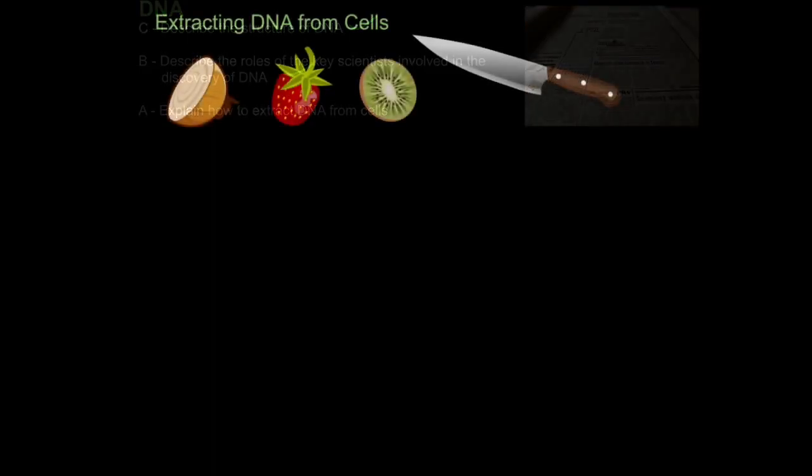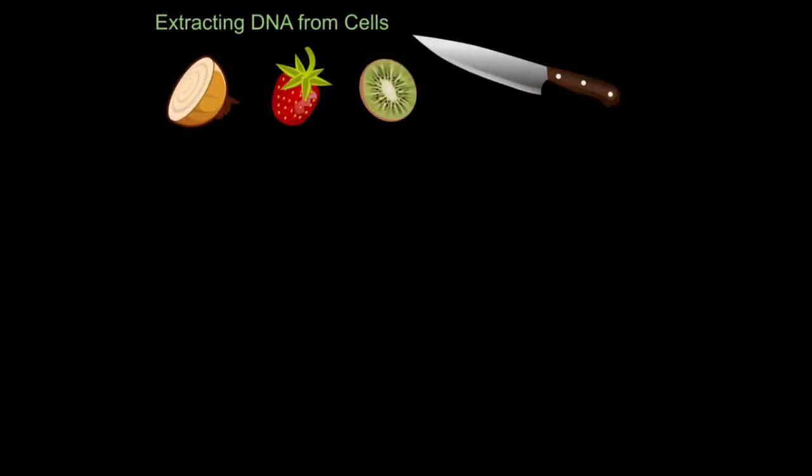Finally, we're going to look at an assessed practical, how to extract DNA from cells. We commonly use strawberries or kiwis or an onion to do this. For this example, I'm going to use an onion. Now in school, you may do a much quicker and simpler method than the one I'm going to show you, but you need to be able to answer exam questions on the full method. So here it is.